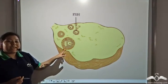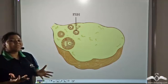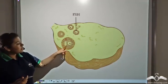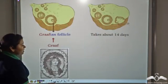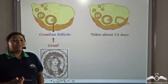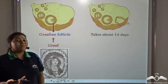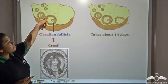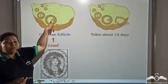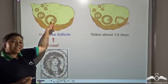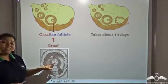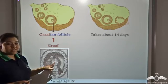The secondary follicle encloses a fluid. The secondary follicle further matures to form the Graafian follicle — the follicle named after the scientist Graaf, who first discovered it.